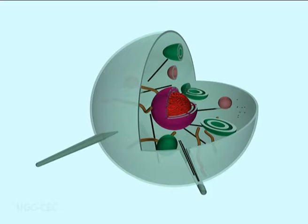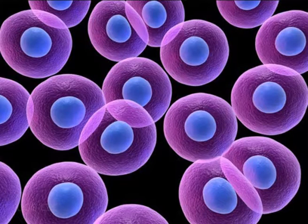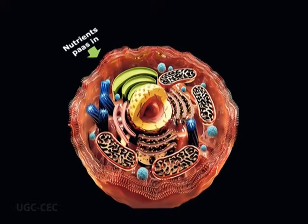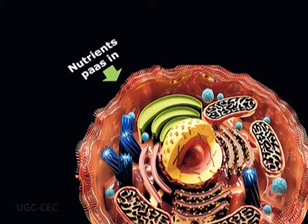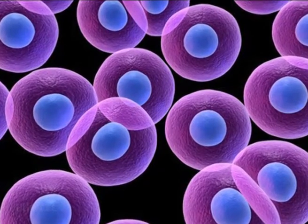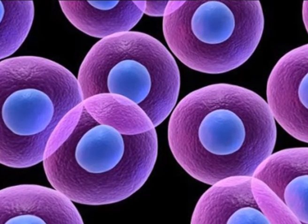Cells are small for two main reasons. First, the cell's nucleus can only control a certain volume of active cytoplasm. Second, cells are limited in size by the surface area to volume ratio. A group of small cells has a relatively larger surface area than a single large cell of the same volume. This is important because nutrients, oxygen, and other materials must enter through the cell's surface. As a cell grows larger, its surface area becomes too small to allow materials to enter quickly enough to meet the cell's needs.